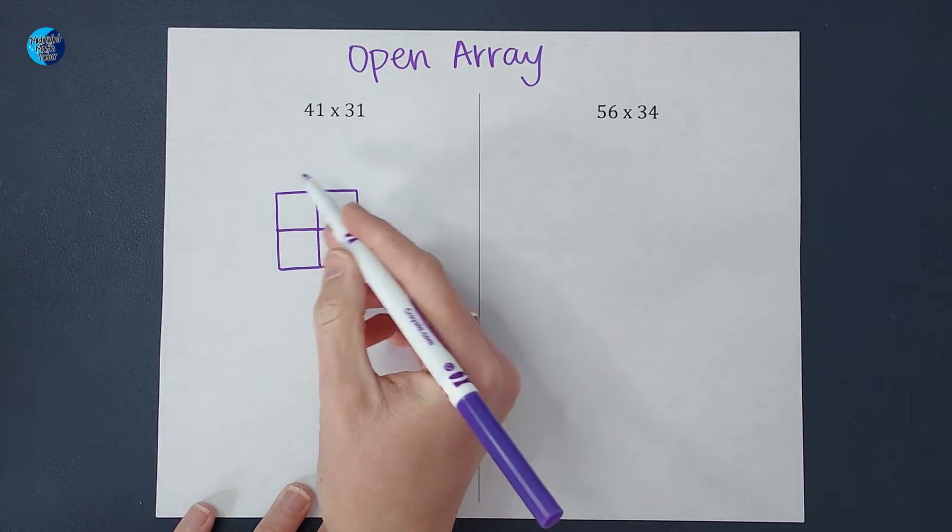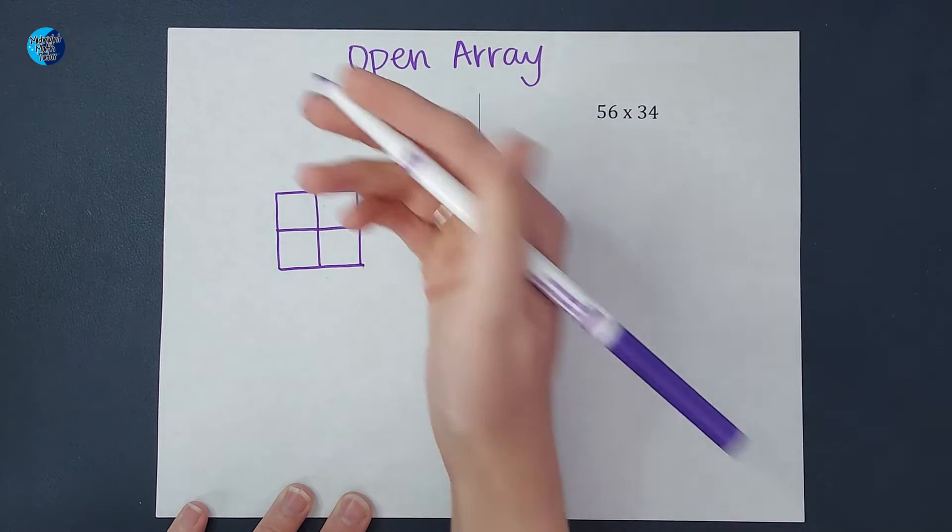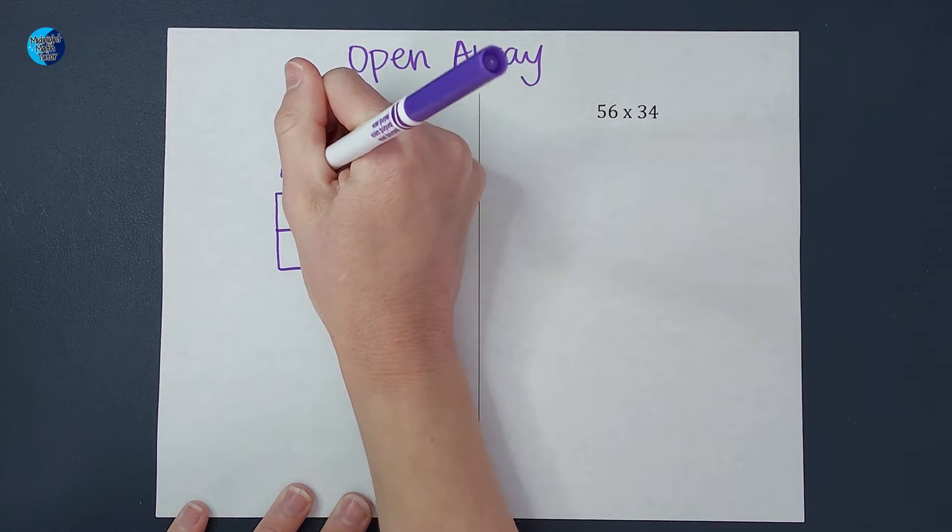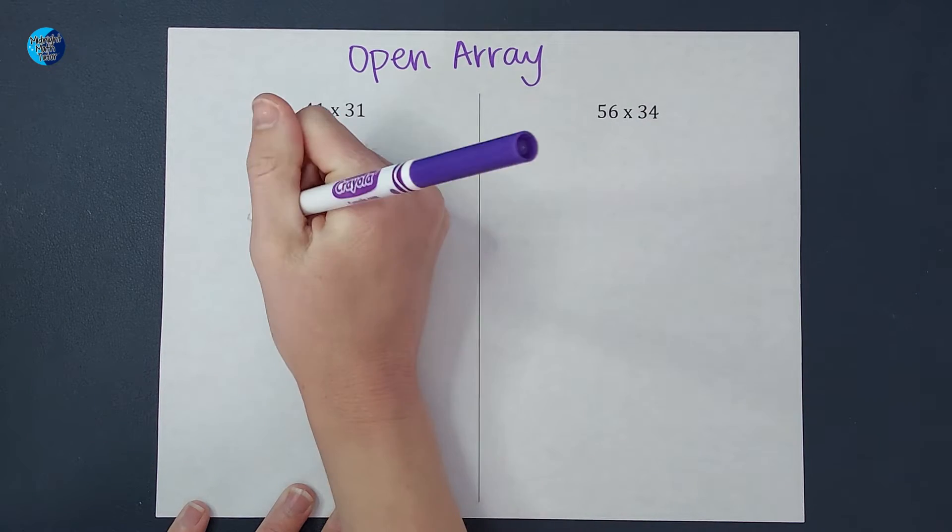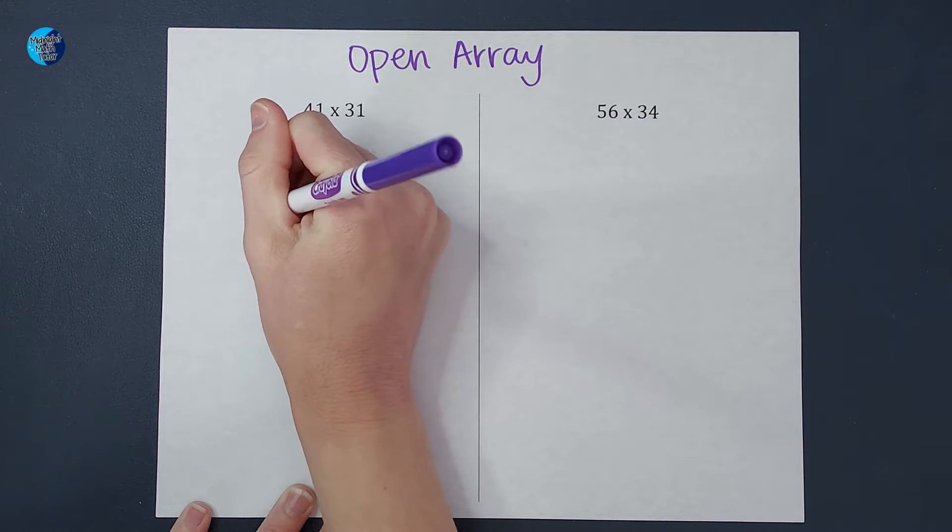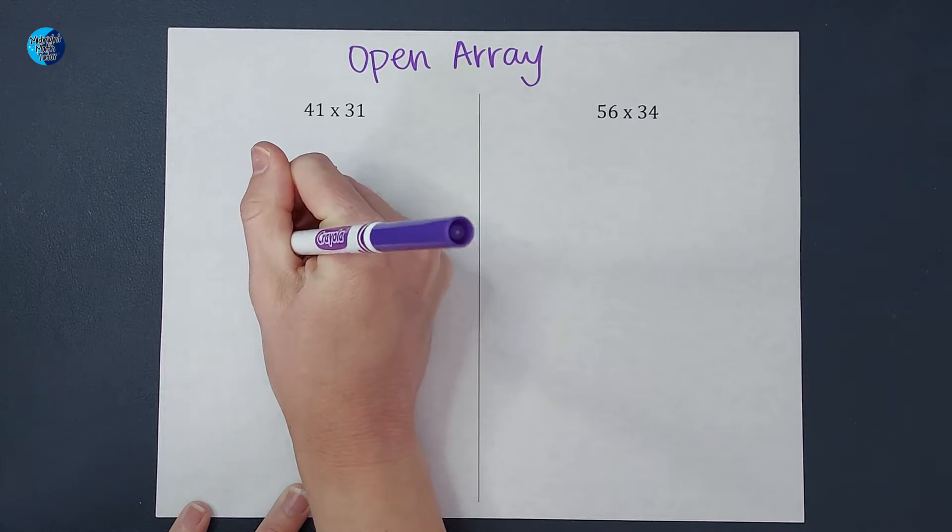On one side, I'm going to have 41, but I'm not going to write it as 41. I'm going to write it as 40 plus one. And on this side, I'm going to write 31, but I'm going to write it as 30 plus one.